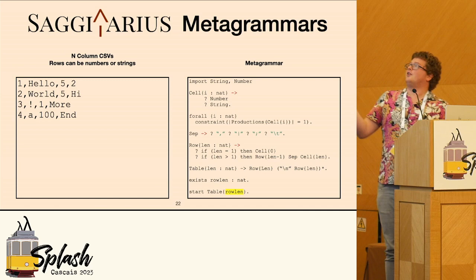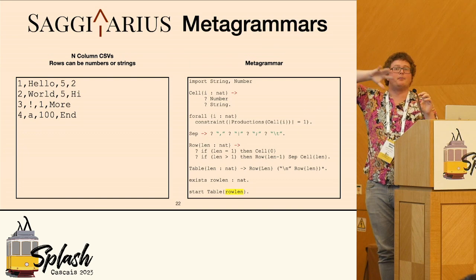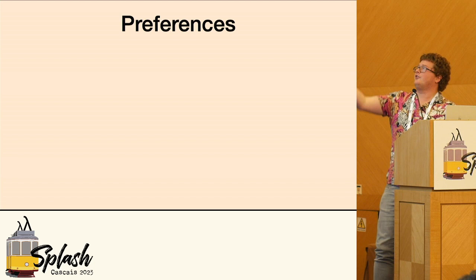We have a little bit of complexity. We would like to generally prefer numbers because number-or-string kind of includes numbers as well as other stuff, so I want to use numbers by default. So I'm going to add in preferences where I can say, hey, I prefer using this number. And we're done.